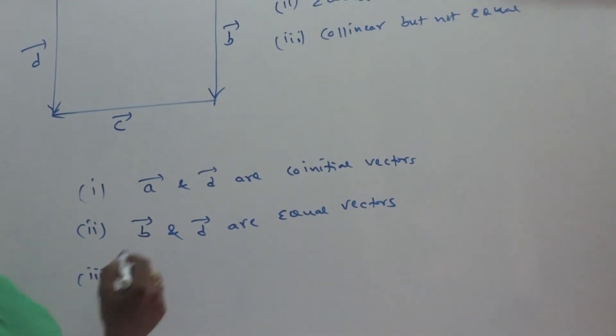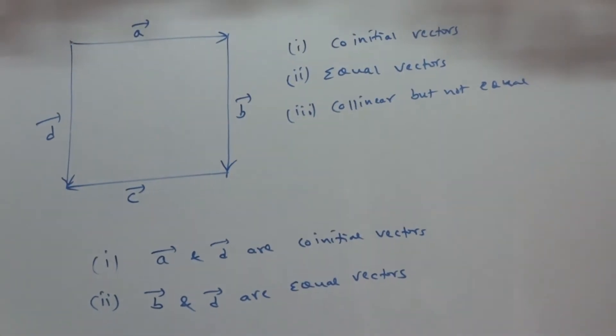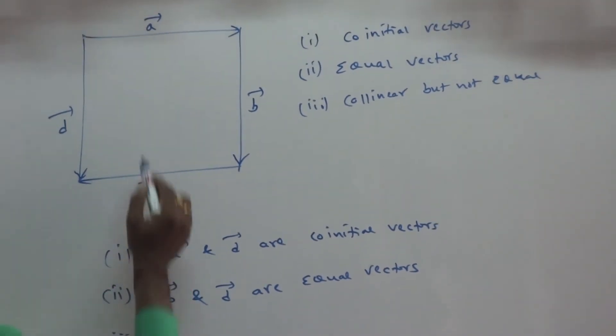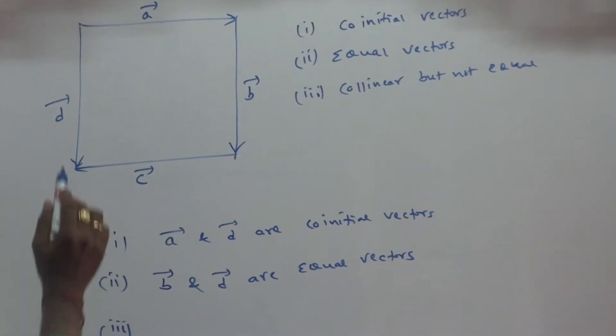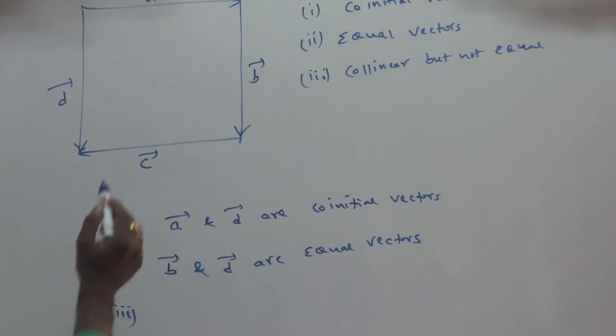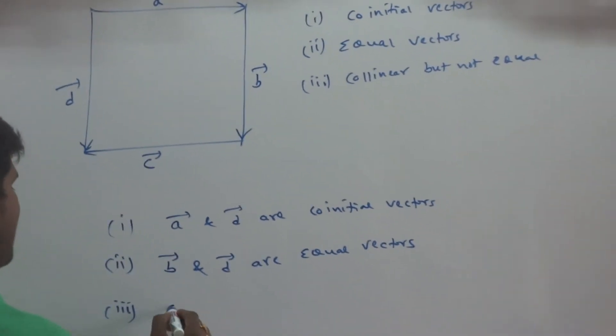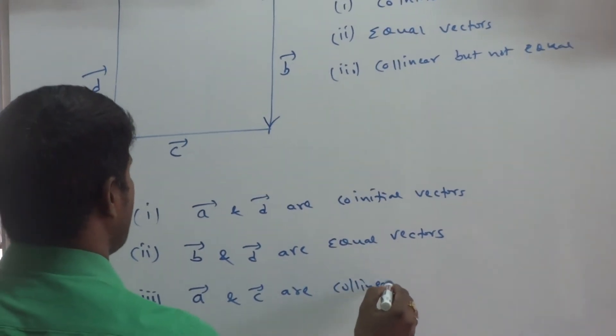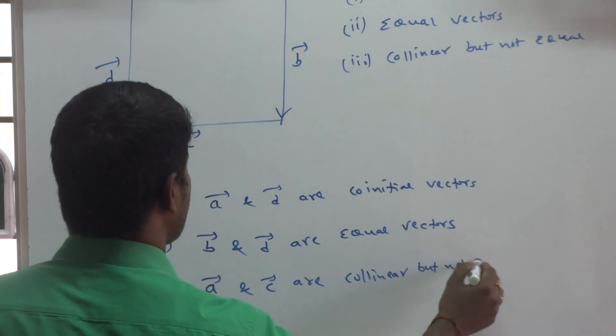Third question, collinear vectors. Collinear but not equal. Collinear but not equal means, you see this one, A and C are collinear. Direction is different. So, vector A and vector C are collinear but not equal.